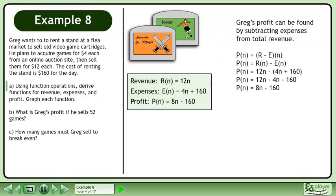Greg's profit can be found by subtracting expenses from total revenue. The profit function is P(n) = 8n - 160.